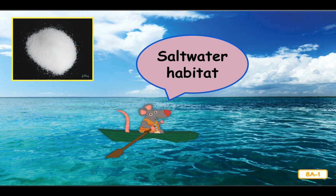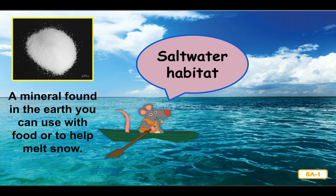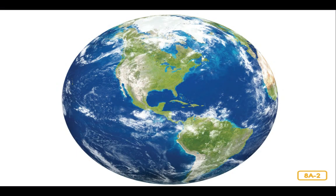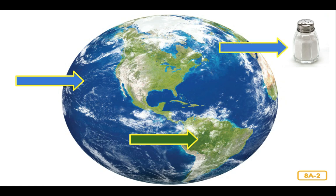This means that we can't use salt water for drinking. Salt is a mineral found in the earth that you can use with food or to help melt snow. More of the earth is covered in water than land. Most of that water is salt water in oceans and seas, which are home to almost half of the world's species of animals and millions of different plants.